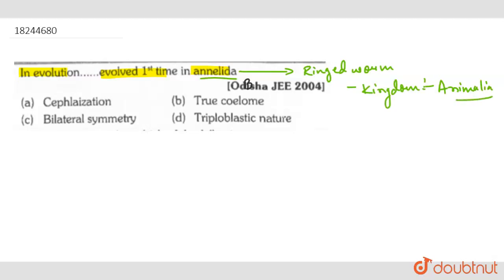The first time that the animal evolved, it was a coelom. Now, we can see where the true coelom is mentioned. We can see the true coelom present. So, the right answer is option B. Thank you.